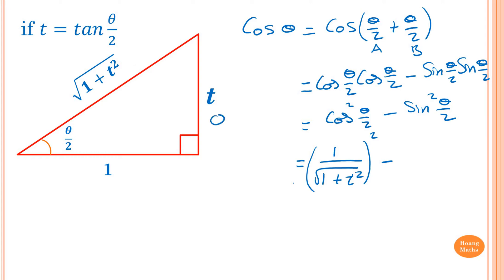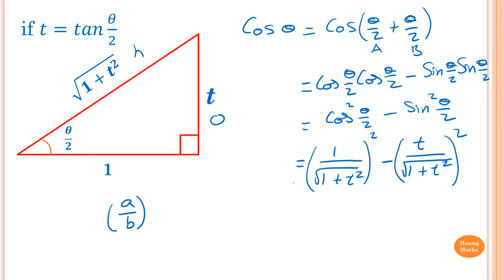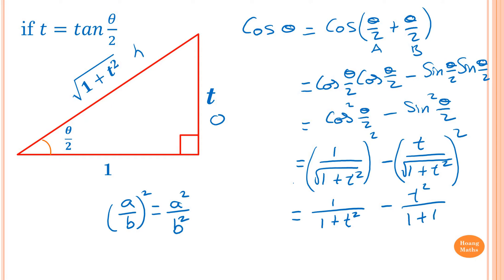sin(θ/2) equals t over √(1+t²), so sin²(θ/2) equals t² over (1+t²). Since (a/b)² = a²/b², squaring and combining gives (1 - t²) over (1 + t²). Therefore cos(θ) = (1 - t²) / (1 + t²). Please take note of this.